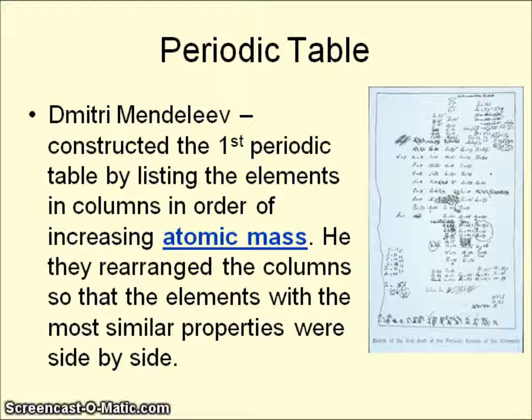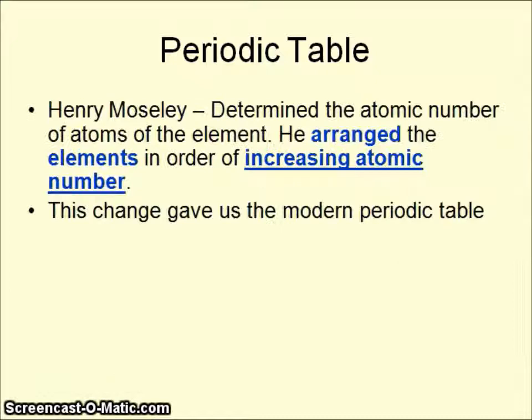He discovered that if you list the elements in columns in order of increasing atomic mass, he found a pattern. He later rearranged the columns so that elements with similar properties were side-by-side, and he discovered that they remained in order of increasing atomic mass if put in a certain arrangement from left to right. Henry Moseley then determined the atomic number for atoms of each element, and instead of arranging them by atomic mass — which causes problems with isotopes — he arranged them in order of increasing atomic number.